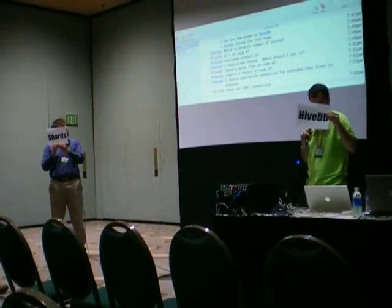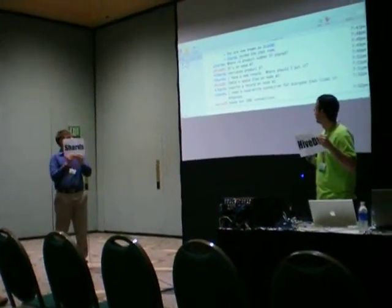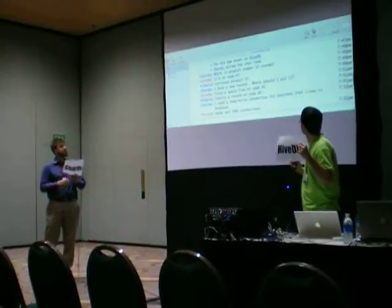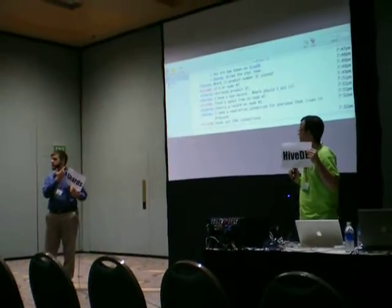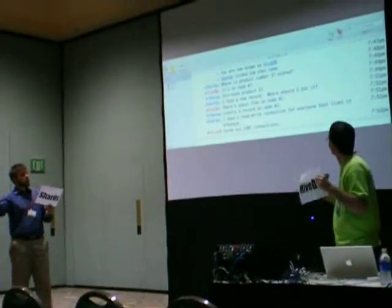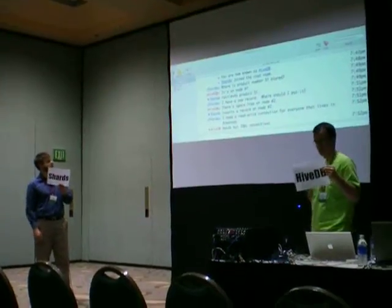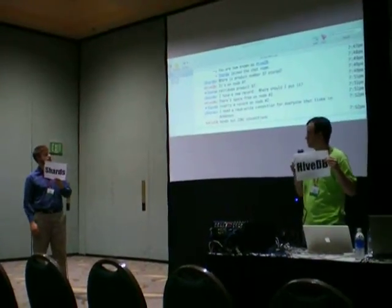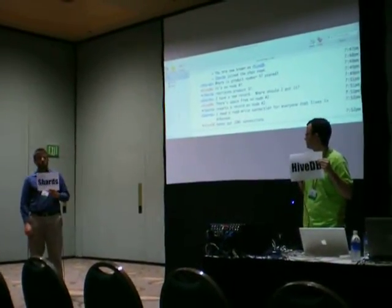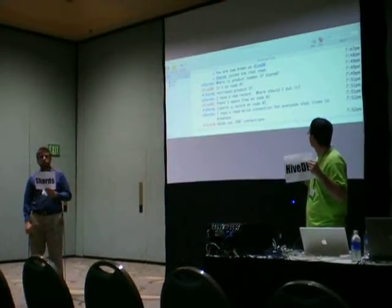It's on node number seven. Me retrieves product 37. This is actually an IRC, so it's got me. I have a new record, where should I put it? There's basically on node number two, if you want to insert a record there. Me inserts a record on node number two.